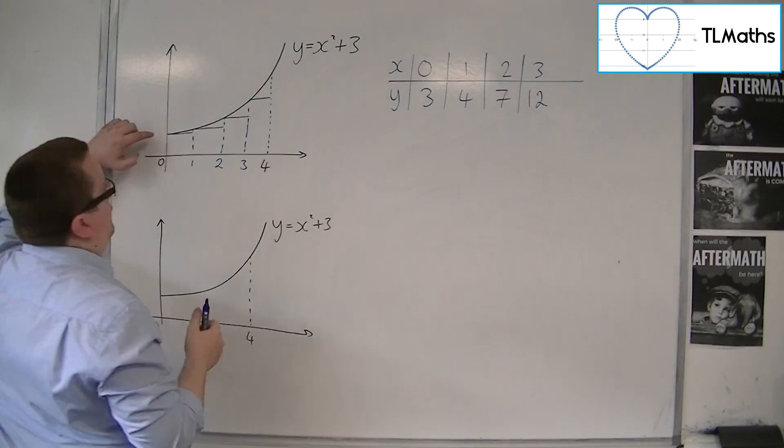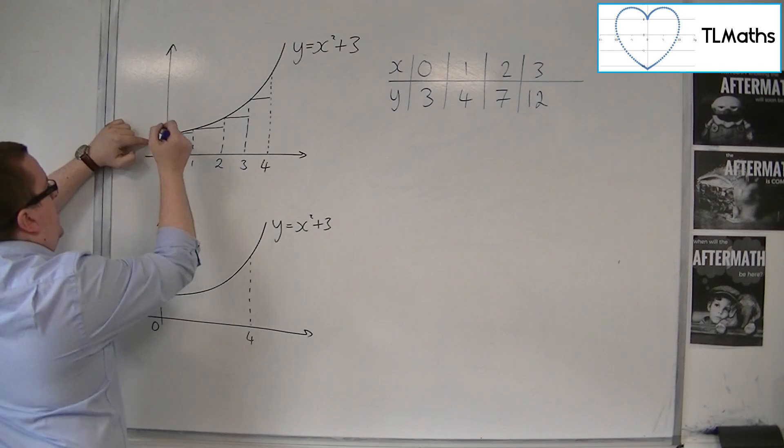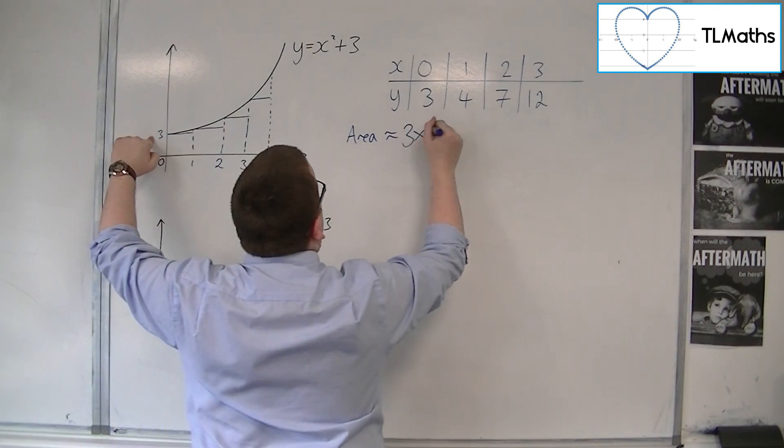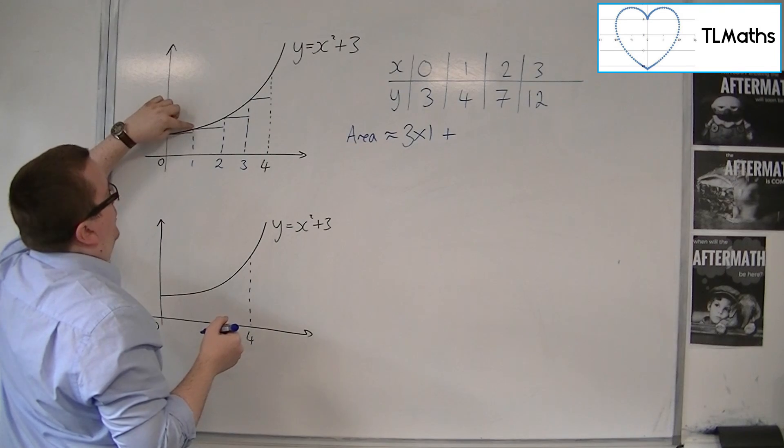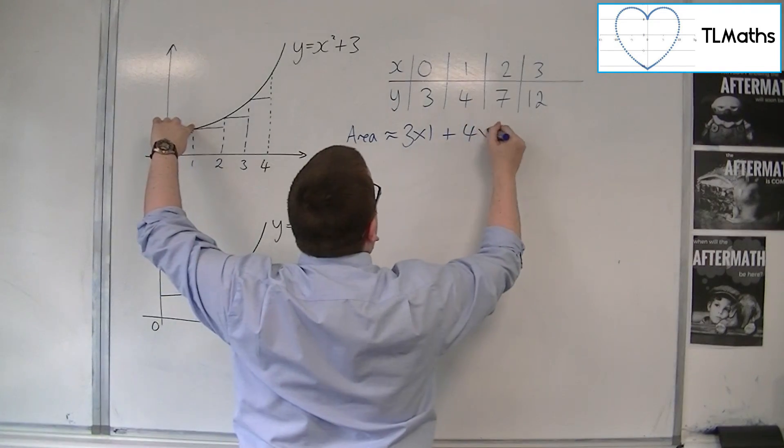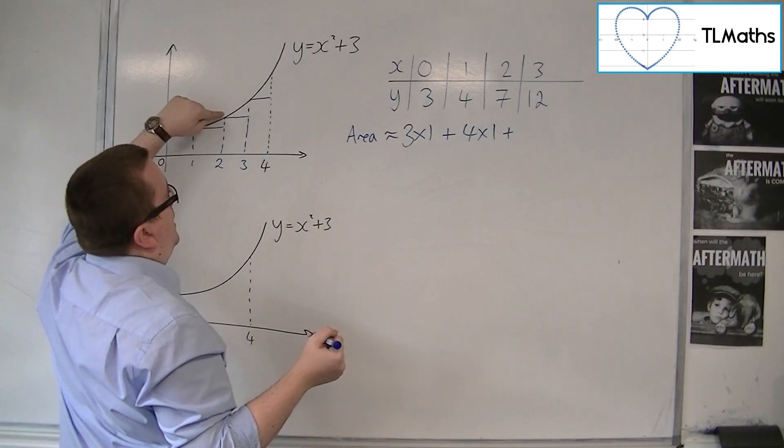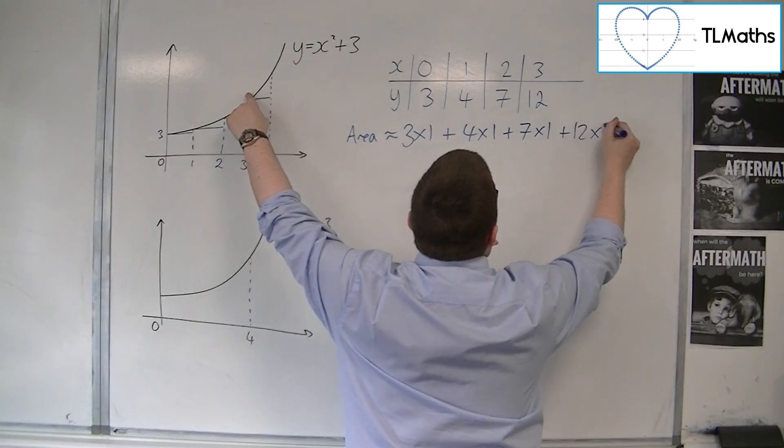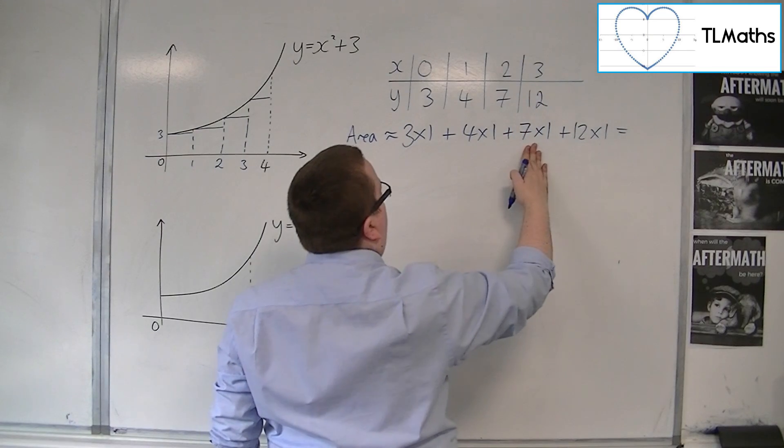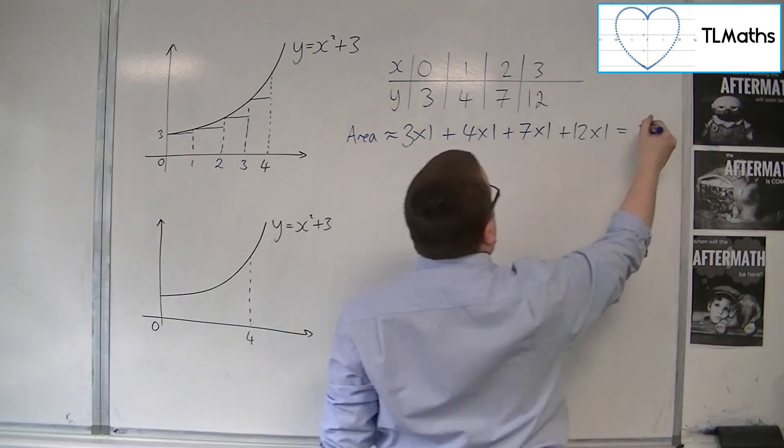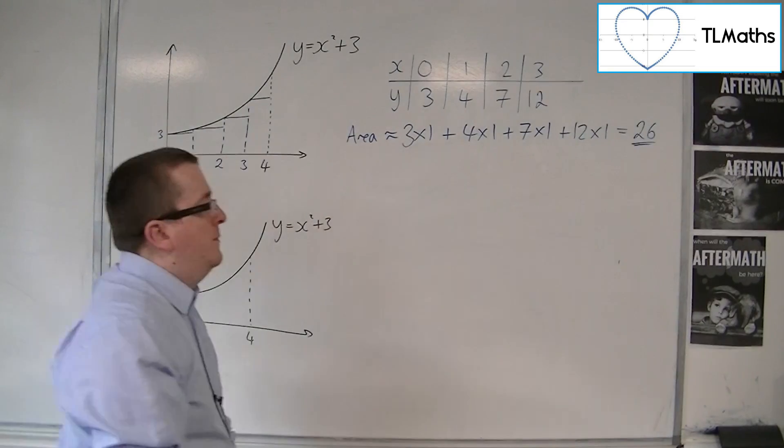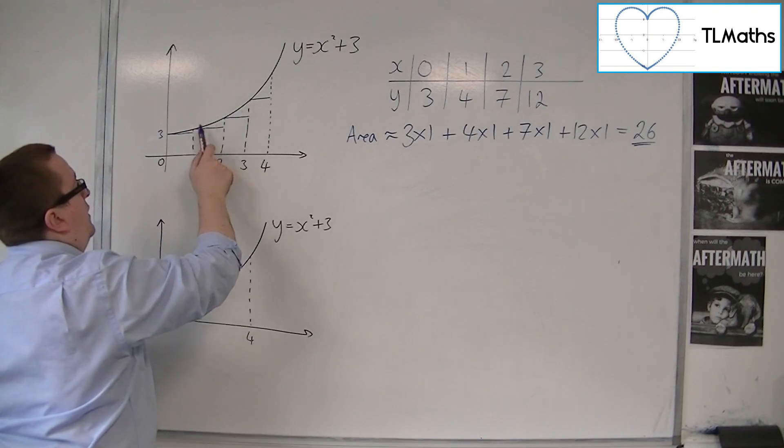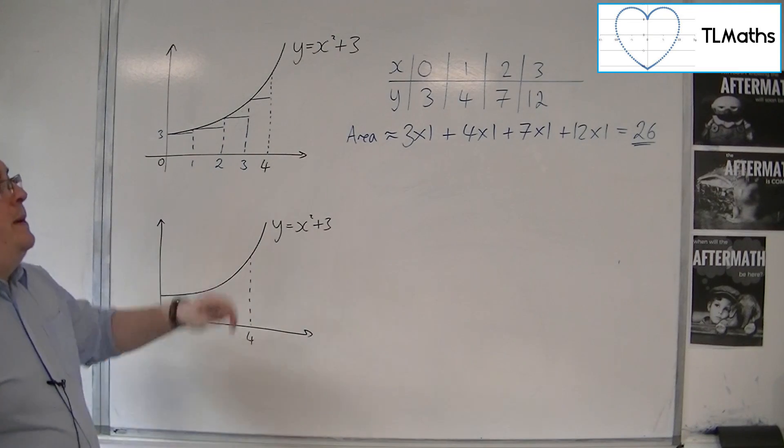So I would have that height as being 3, so 3 times 1. So area is approximately 3 times 1 plus 4 times 1, plus the height of that rectangle is 7, so 7 times 1, plus the height of that rectangle is 12, so 12 times 1. So I'd have 12, 7, so 19, 23, 26. And quite clearly, this would be an underestimate because there's these chunks here that I'm missing out.